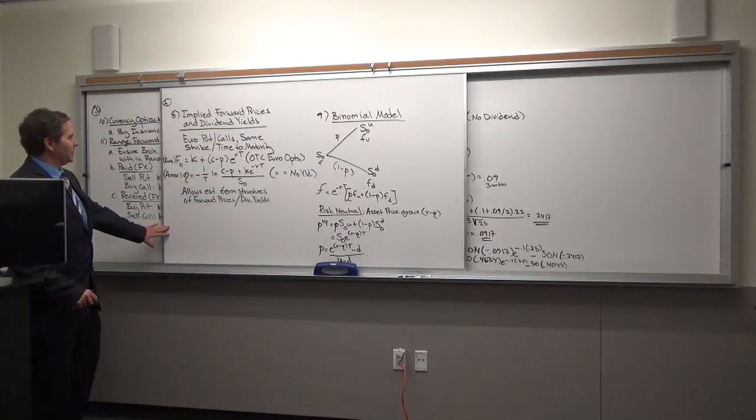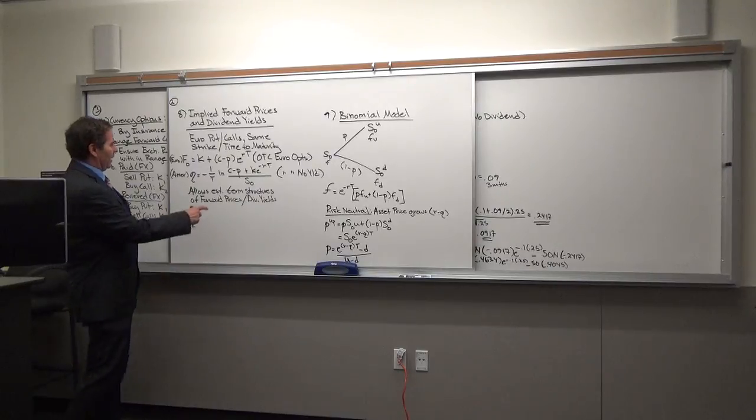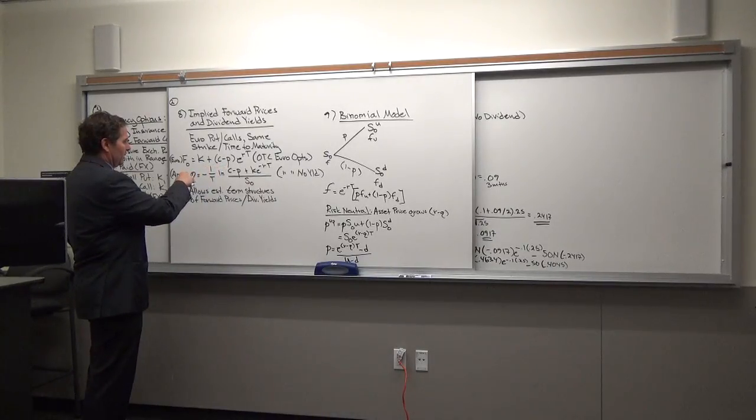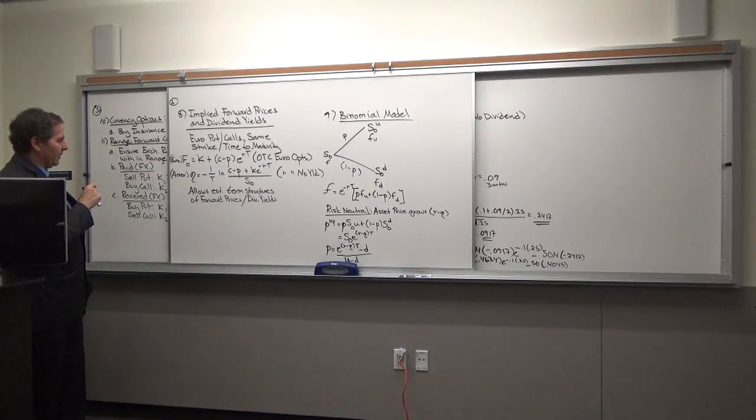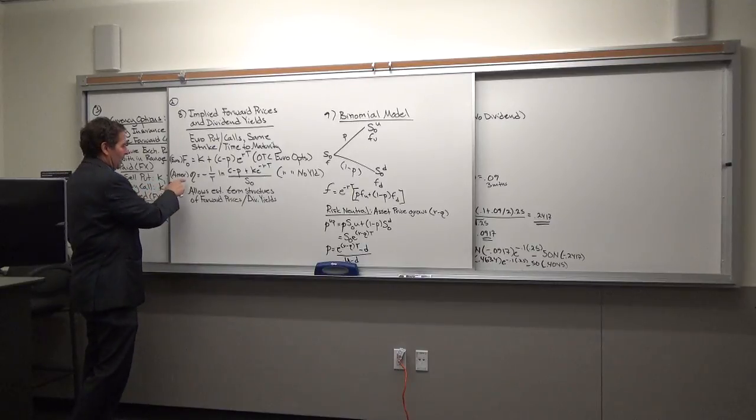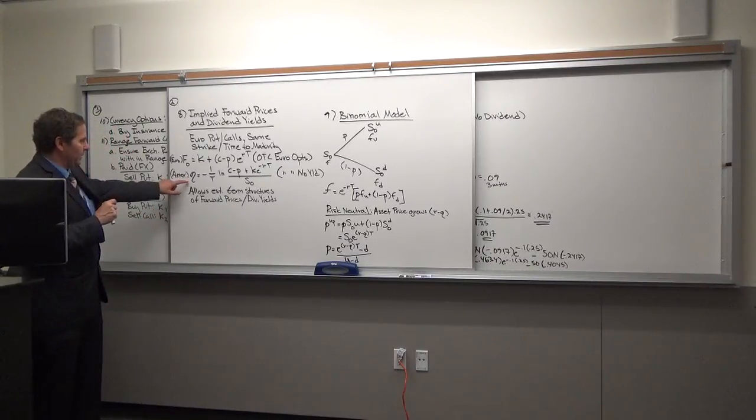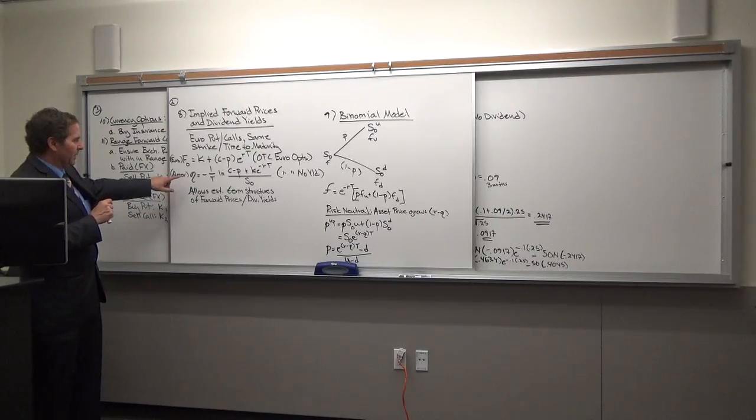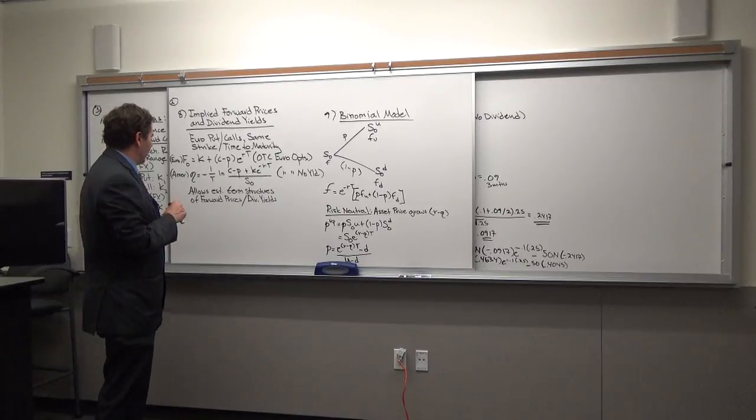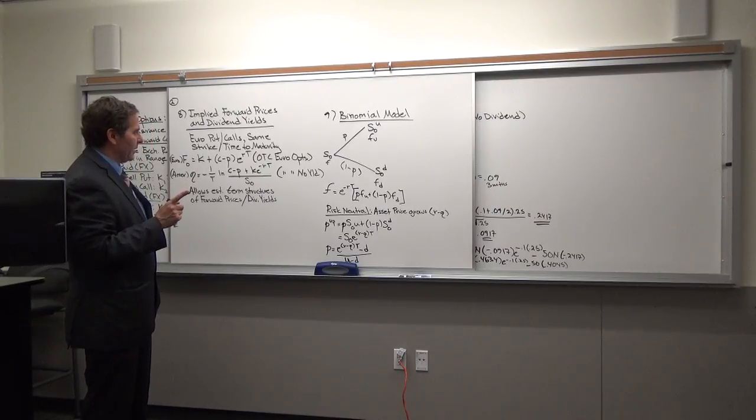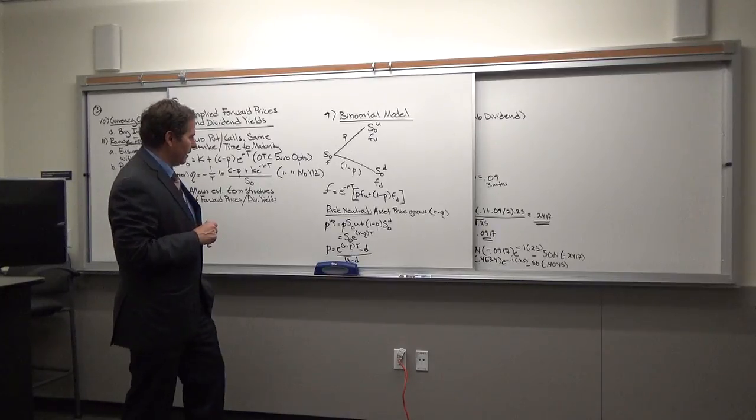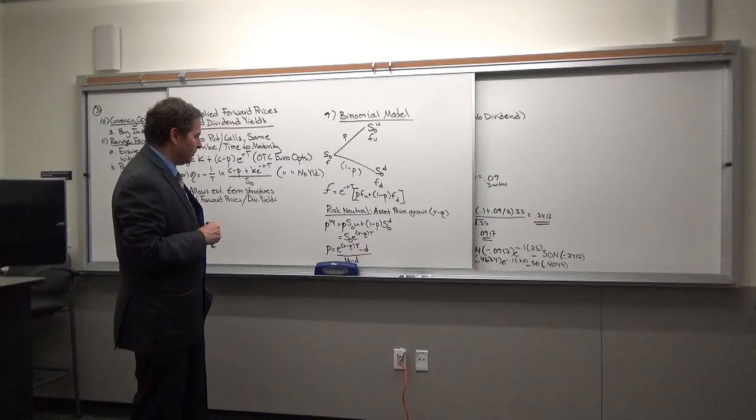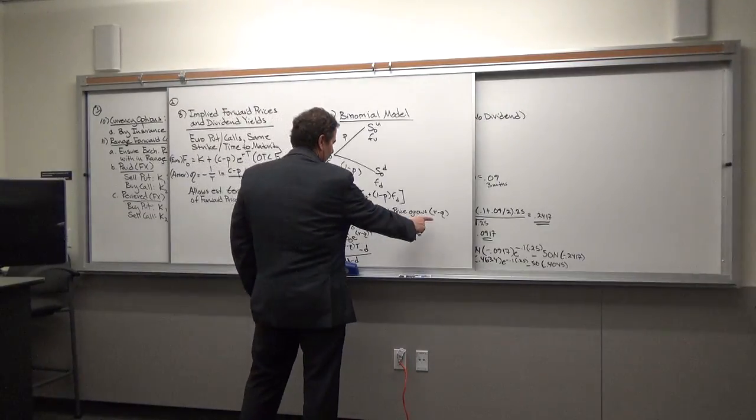So when you're looking at the implied forward prices and the dividend yields, again you're going to be adjusting. It's the call minus the put, you have the interest rate on the forward contract, and then the Q is the, is the American, is what you would use. This is the yield calculation that you would use in an American option, and this is what you would use with just an over-the-counter European option. When you're valuing the forward contract, you can also use a binomial model where again you're adjusting for the foreign interest rate.